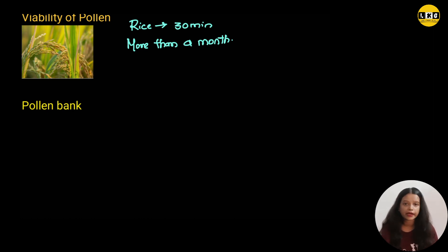Next is pollen bank. What is pollen bank? You all know some of the species are getting endangered. In order to conserve those species, the pollen grains of such species are stored in the form of pollen banks. How is it stored? It is stored in liquid nitrogen at the temperature of minus 196 degree Celsius. This process is also known as cryopreservation.